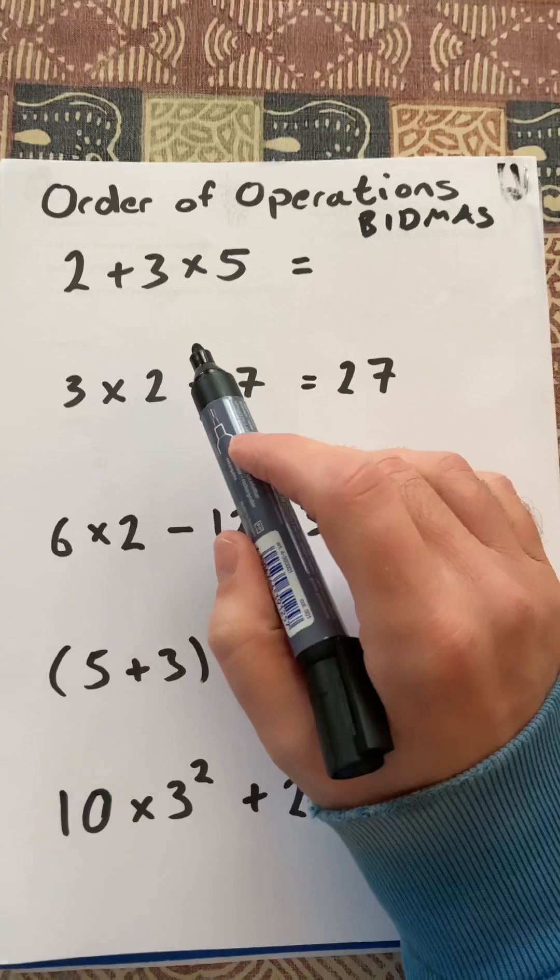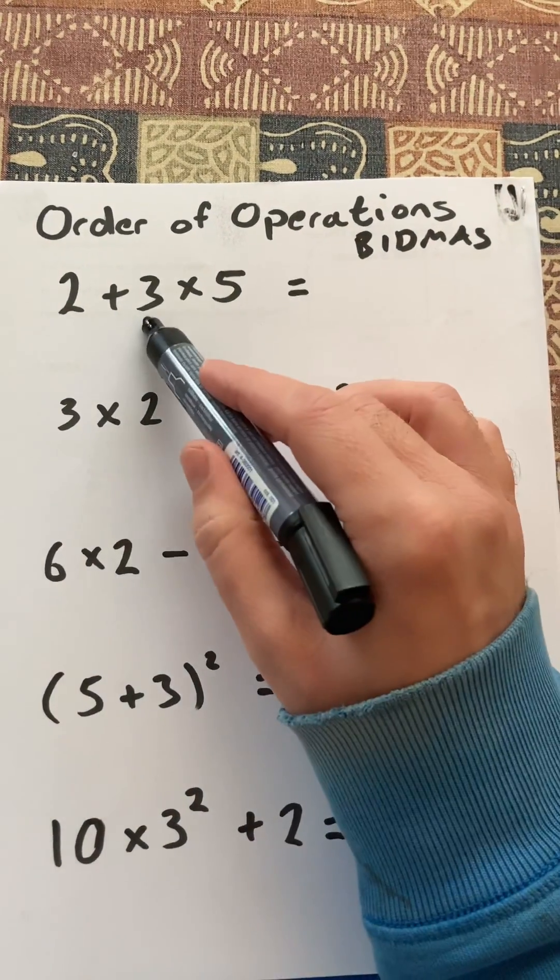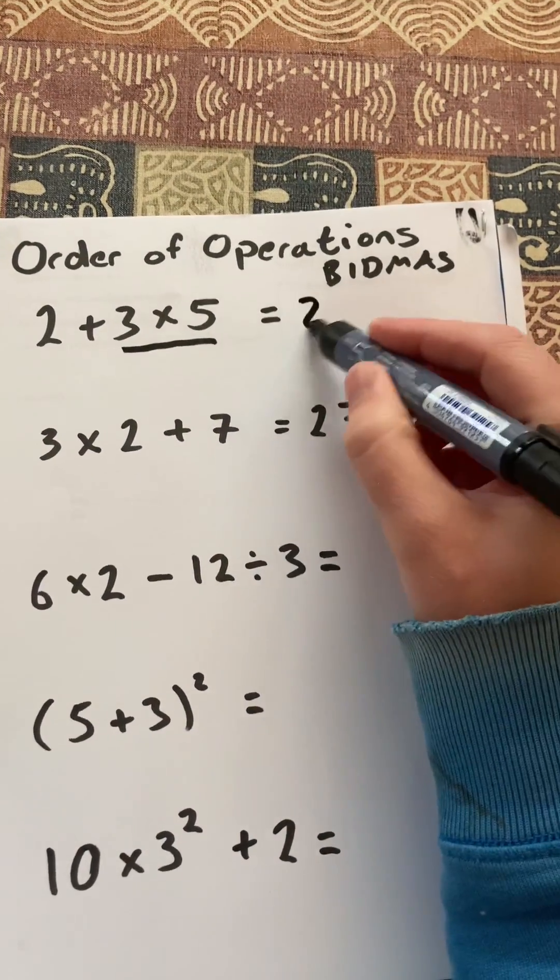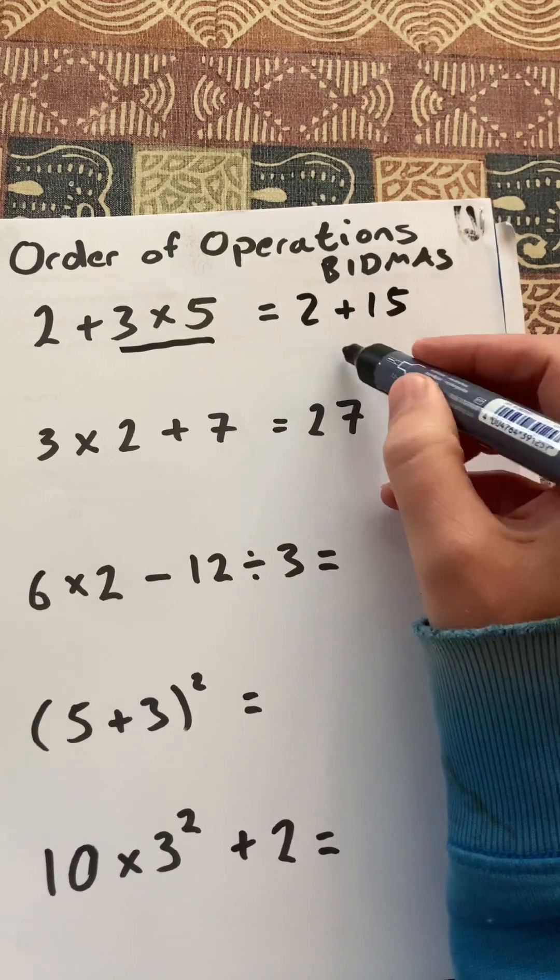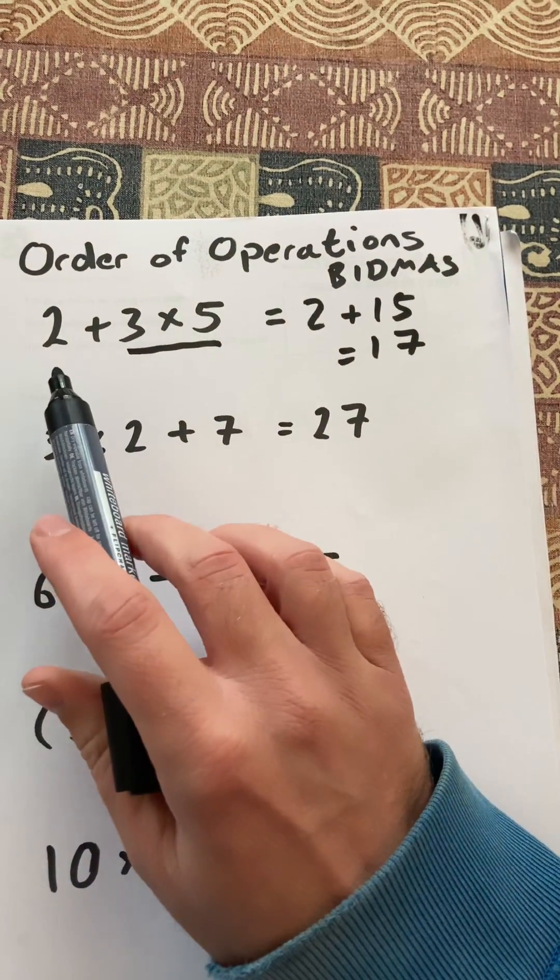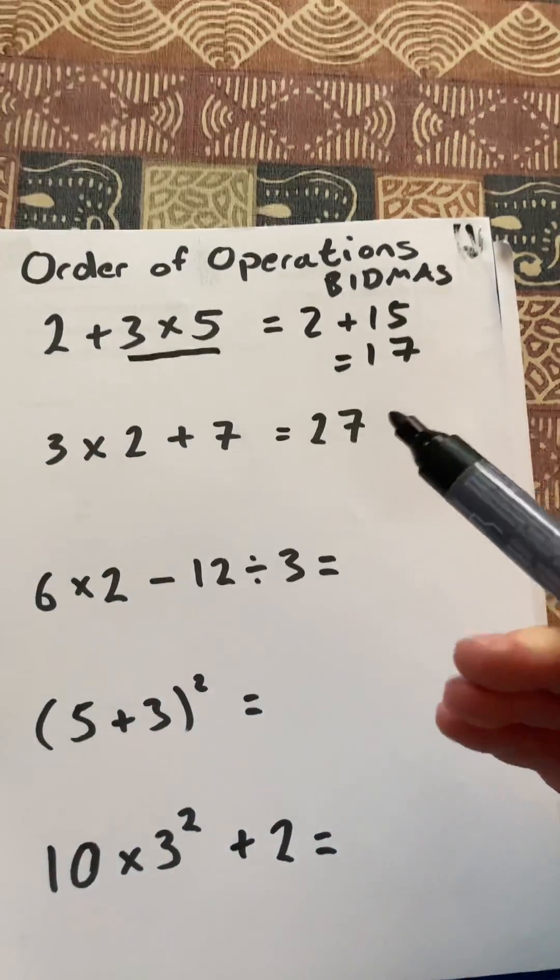So let's look at this first one. We have 2 + 3 × 5, so we can't just read from left to right. We must do the multiplication first, so that'll be 2 + 15, which equals 17. So quite different to if you'd done 2 + 3 first and then times that by 5. You would have needed to have brackets there.